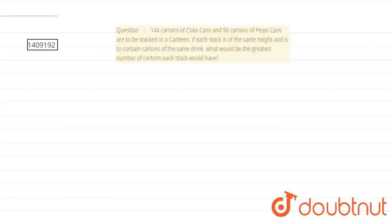So friends, in this question we are given that 144 cartons of Coke cans and 90 cartons of Pepsi cans are to be stacked in a canteen. If each stack is of the same height and is to contain cartons of the same drink, what would be the greatest number of cartons each stack would have?